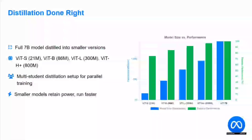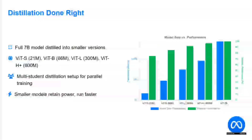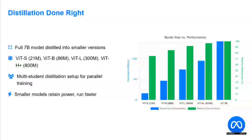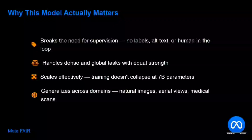Distillation done right — other versions are also released. The full 7B model has been distilled into smaller versions as well: a ViT with 21 million parameters, 86M, 300M, 800M, etc. Different variants are also released.